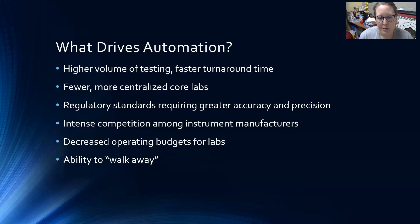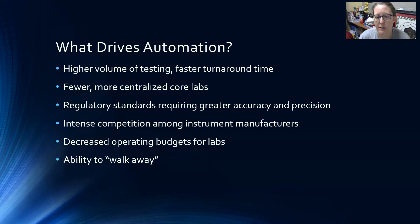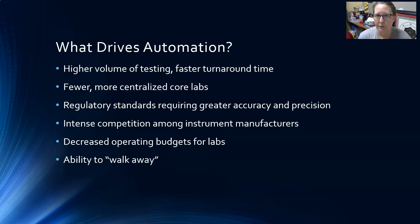There are also regulatory standards that require greater accuracy and precision, especially compared to manual methods. There's intense competition among instrument manufacturers that keeps making automation better, faster, and more capable with new technology. There have also been decreases in operating budgets for labs as reimbursements have changed — from a fee-for-service model, where every test a physician ordered was automatically reimbursed by Medicaid, Medicare, and insurance companies, to more of a flat fee arrangement.